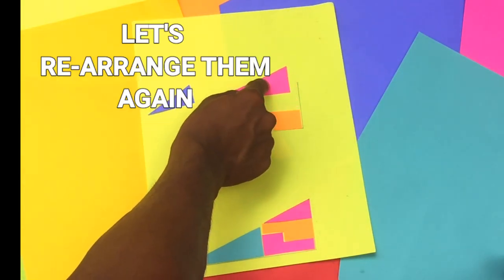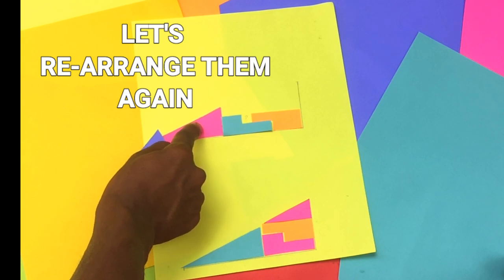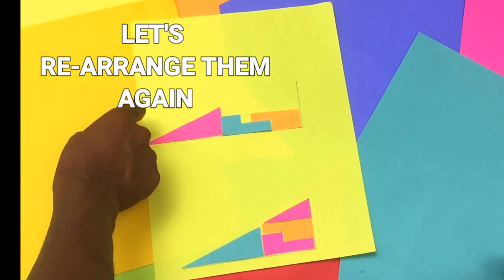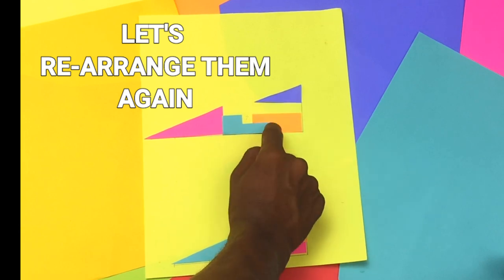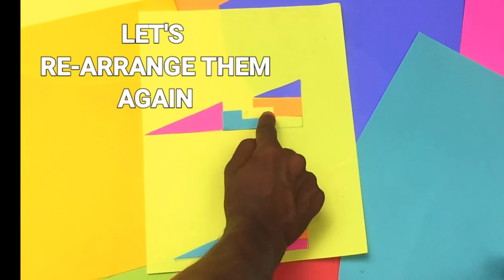So let's see the illusion again. Let's rearrange them. Then I have four pieces that fit together to form a triangle. The weird thing is, if I rearrange this triangle, something odd will happen.